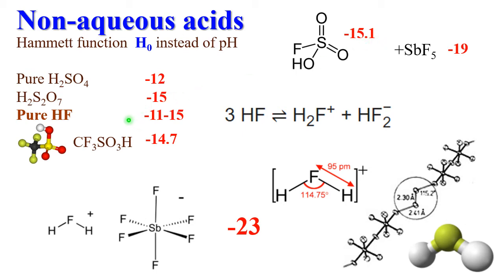It's interesting that when you remove water, even weak acids can become stronger — like hydrogen fluoride, which is a weak acid in water. When it is pure liquid, it becomes a fantastically strong superacid. The reason is this equation: three molecules of HF give us the H₂F⁺ cation — not hydronium, but H₂F⁺, which is somehow similar to hydronium — and the HF₂⁻ anion.